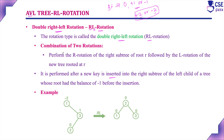In this session we are going to discuss double right left rotation, which in short we call RL rotation. It is a combination of two rotations: first we have to perform a right rotation of the right subtree of the root, followed by a left rotation of the new tree rooted at the original root. First right rotation, then left rotation — that is RL rotation.